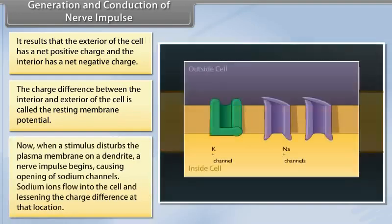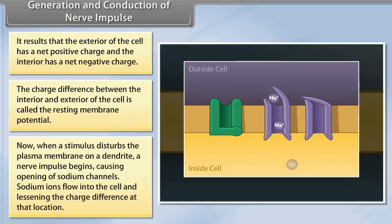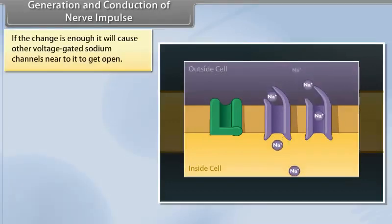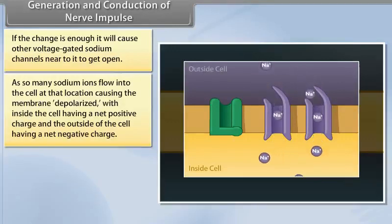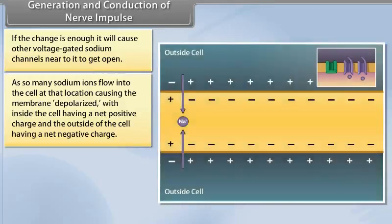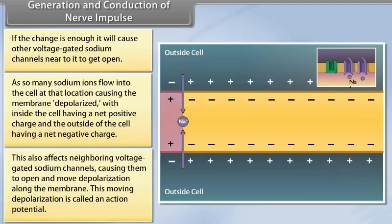When a stimulus disturbs the plasma membrane on a dendrite, a nerve impulse begins, causing opening of sodium channels. Sodium ions flow into the cell and lessen the charge difference at that location. If the charge is enough, it will cause other voltage-gated sodium channels near it to open. As so many sodium ions flow into the cell at that location, the membrane becomes depolarized, with inside the cell having a net positive charge and the outside having a net negative charge.